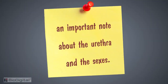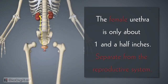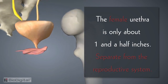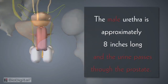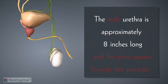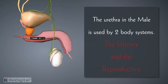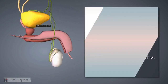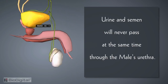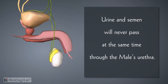Here is an important note about the urethra and the sexes. In females, the urethra is only about one and a half inches long and is separate from the reproductive system. In males, the urethra is approximately eight inches long, and before the urine exits, it passes through the prostate gland. The male urethra is used by two body systems — the urinary and the reproductive — but only urine passes through it in the urinary system, and only semen passes through it in the reproductive system. Urine and semen will never pass at the same time through the male urethra.